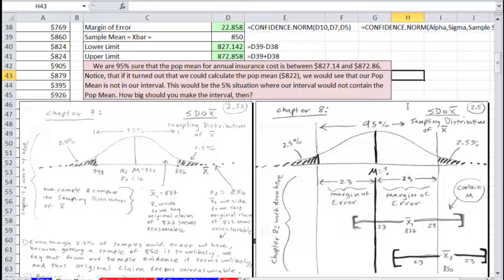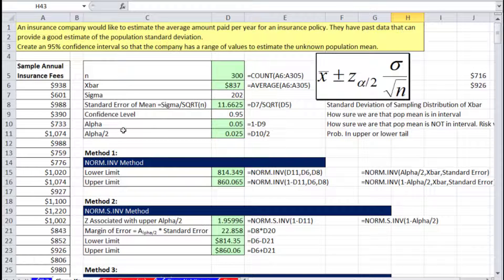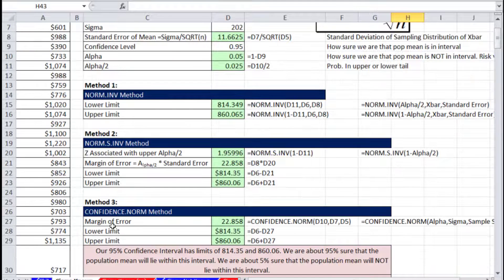So in this video, we saw all about the formula for calculating confidence interval when sigma is known. We saw NORM.INV, NORM.S.INV, and even the CONFIDENCE.NORM. In the next video, we will talk about what to do when sigma is not known, and we'll learn a new distribution called the t distribution. See you next video.